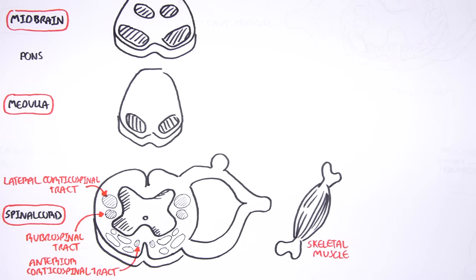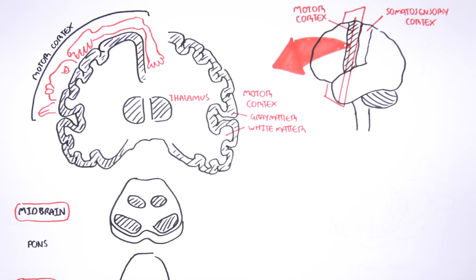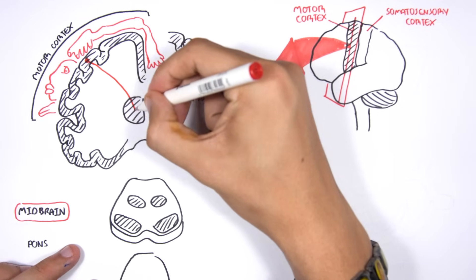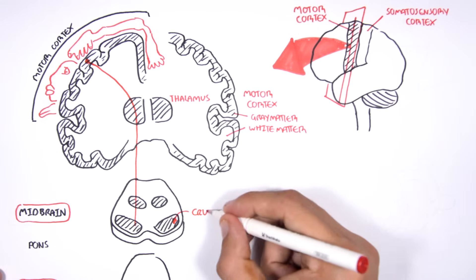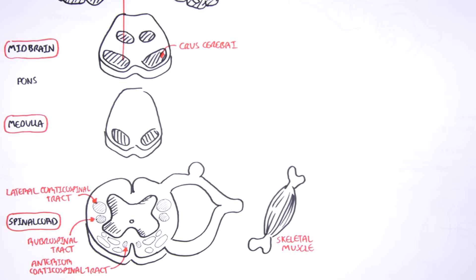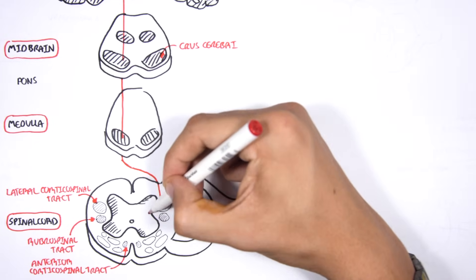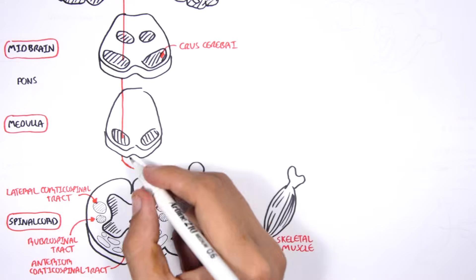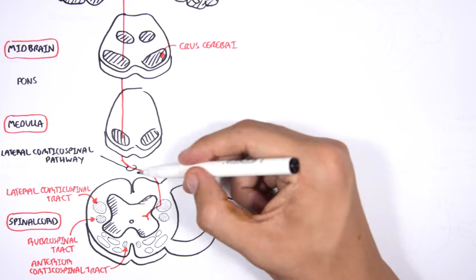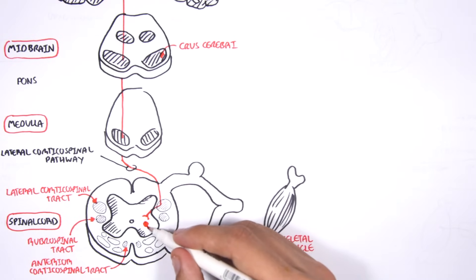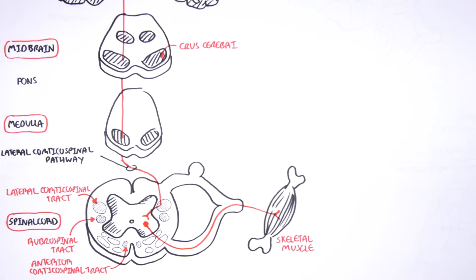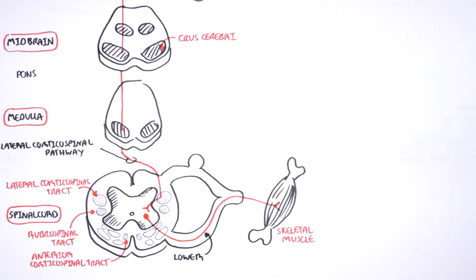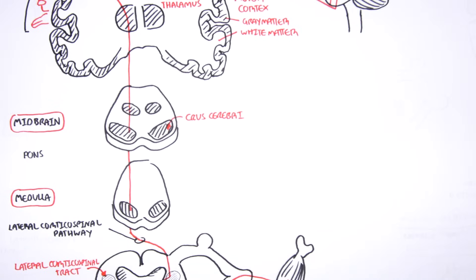Let us first focus on the corticospinal tract. Say we want to move our hands — a distal muscle. A neuron will arise from the motor cortex which controls hand movements. It will pass through the thalamus, pass through the crus cerebri of the midbrain and the pyramids of the medulla, where it will then cross over and land on the lateral corticospinal tract before synapsing with a second neuron on the ventral horn of the spinal cord. The first neuron coming down is therefore part of the lateral corticospinal pathway. The second neuron, coming from the ventral horn, will then target the skeletal muscle — the distal muscle, such as muscles of the hands. The second neuron is known as the lower motor neuron, and the first neuron arising from the cortex is the upper motor neuron.